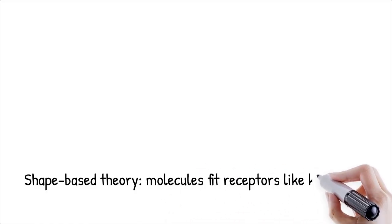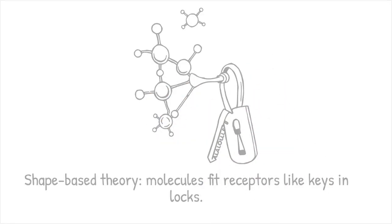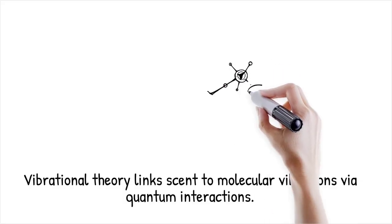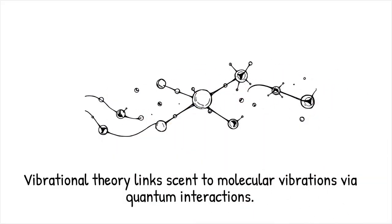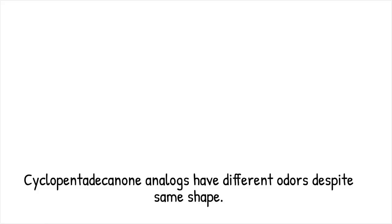The traditional shape-based theory of olfaction holds that odorant molecules fit into receptors like a key in a lock, triggering a neural response. The quantum vibrational theory argues that receptors instead sense the specific vibrational energy levels of molecules through electron tunneling events. While the shape model struggles to explain why chemically similar isotopomers smell different, the vibrational model accounts for these discrepancies by linking scent to quantum interaction. This contrast highlights the potential role of non-classical physics in a biological sense organ. Cyclopentadecanone and its sulfur-substituted analog produce different odors even though they share the same carbon backbone shape. It is like preferring a song version based on its unique bass vibrations rather than its melody alone.